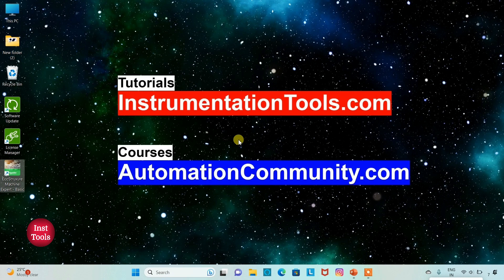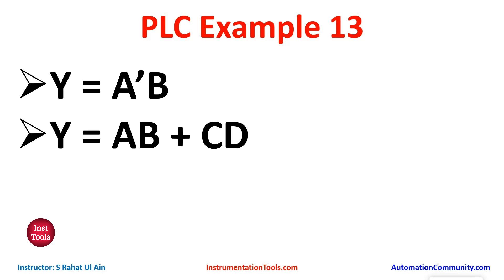Hello friends, welcome to Automation Community. Today in this video we will be developing ladder logic from boolean expressions. Let's look at the examples. The first example: Y is equal to A̅B, and the second example: Y is equal to AB plus CD. We will start with the first one, that is Y equals A̅B.